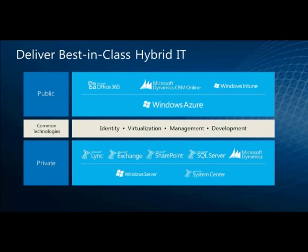For common identity, a lot of you are familiar with Active Directory. We're allowing you to federate Active Directory for public cloud applications as well, so application owners can have a single sign-on experience. For example, Coca-Cola enterprises implemented this using a mixture of on-premises SAP and Active Directory with Microsoft Office 365. For common virtualization, we enable application portability — today you can re-host Windows Server 2008 R2 VHDs on Windows Azure with a technology called VM Role.